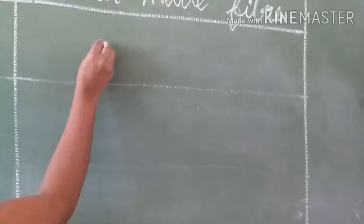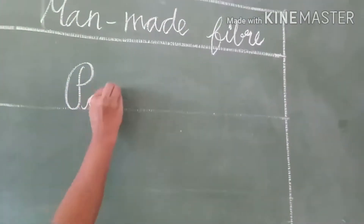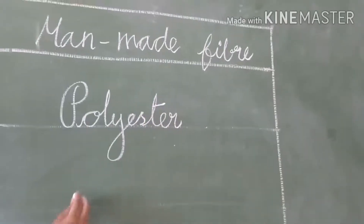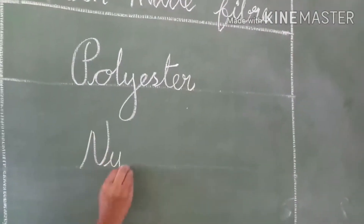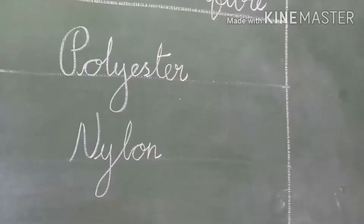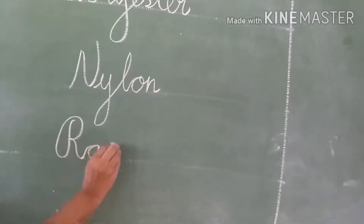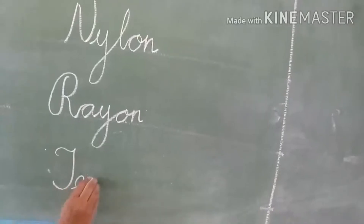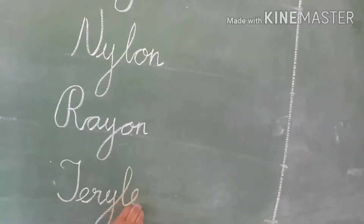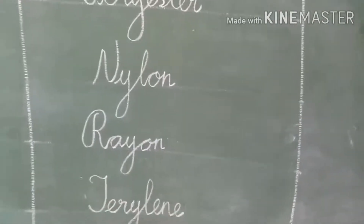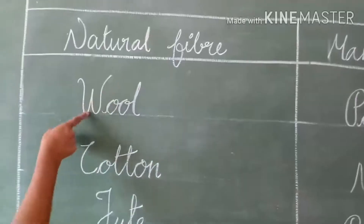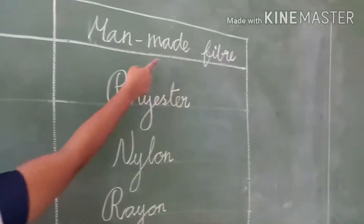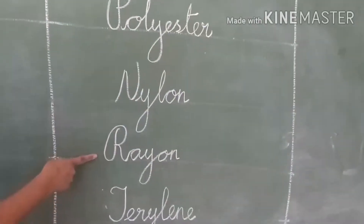Now let's write the Man-Made Fibers: Polyester, Nylon, Rayon, and Teryline. So the natural fibers are Wool, Cotton, Jute, and Silk, and the man-made fibers are Polyester, Nylon, Rayon, and Teryline.